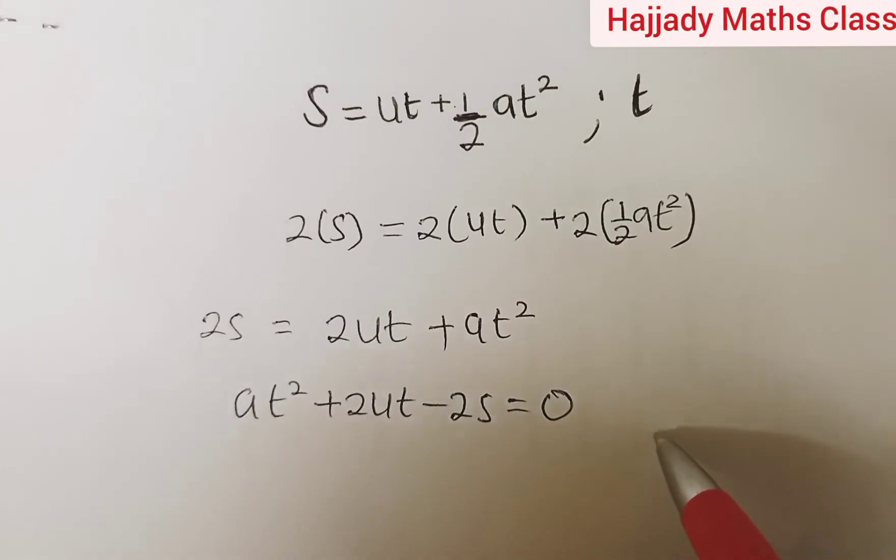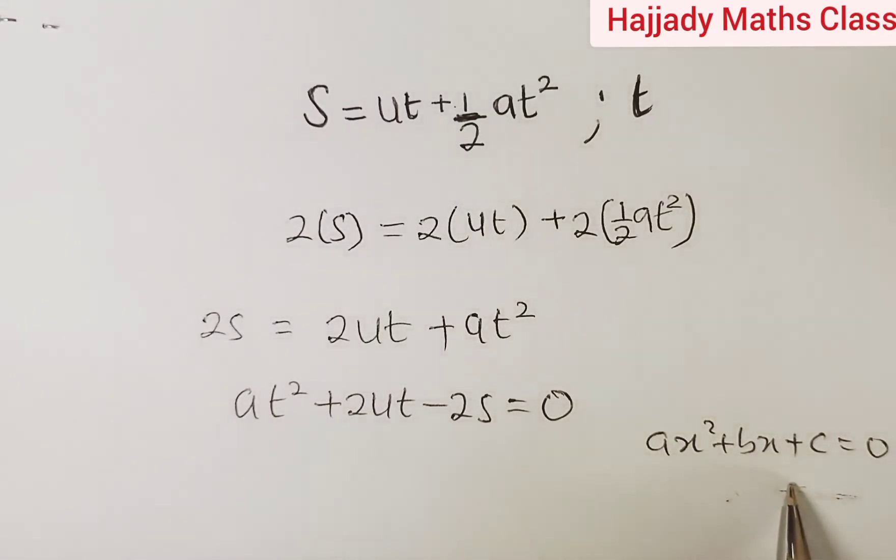Don't forget that a quadratic equation looks like this: ax squared plus bx plus c equals 0. This is the form of a quadratic equation.